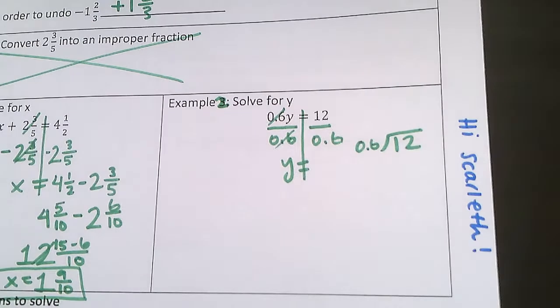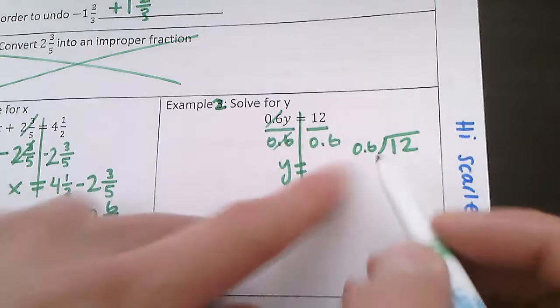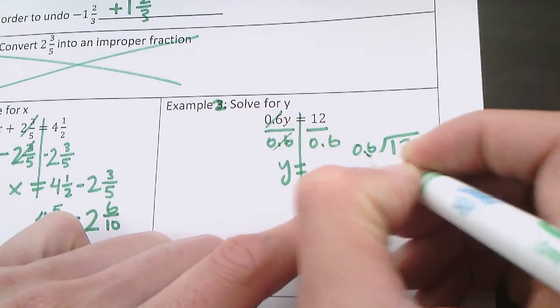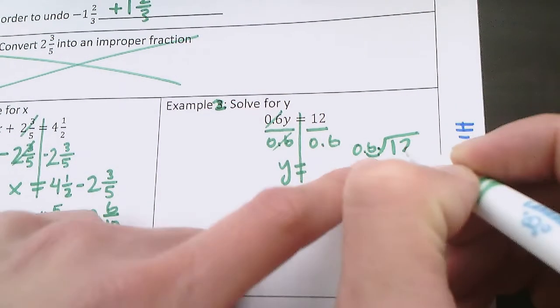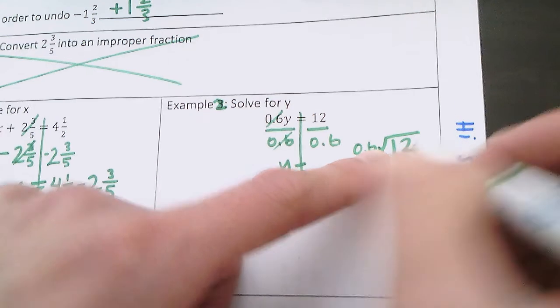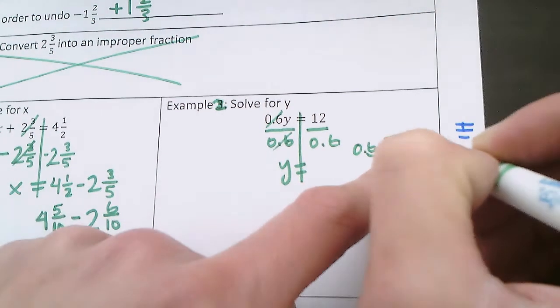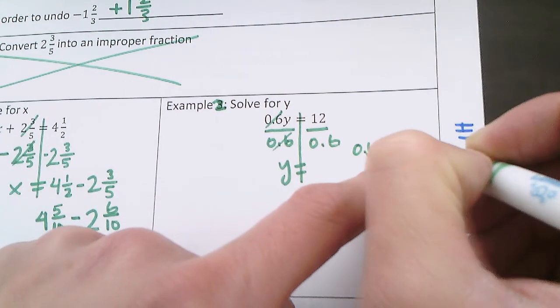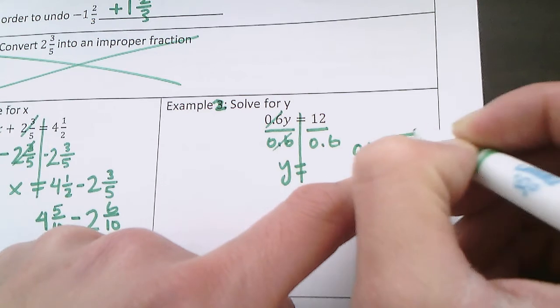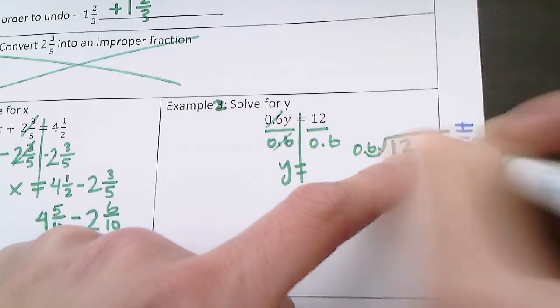Now if you remember, when we're dividing by a number that has a decimal, I have to move the decimal to the end of the number. Now it's at the end. And in order to move it to the end, I have to move it one place. So this means I have to move the decimal in this number, which in this case is at the end, one place over also. So now it's here and I'll add a 0.